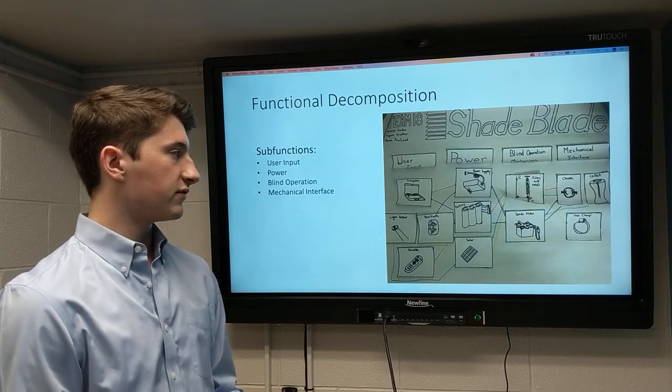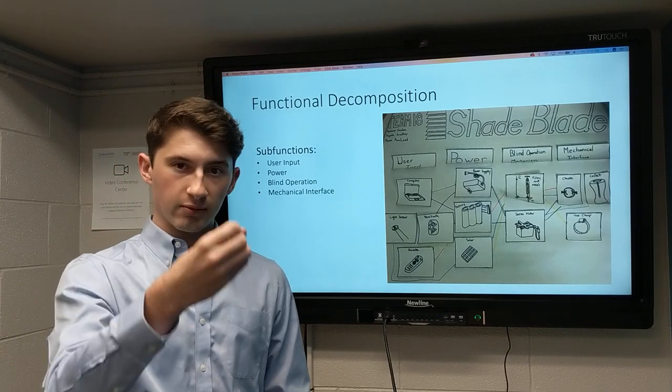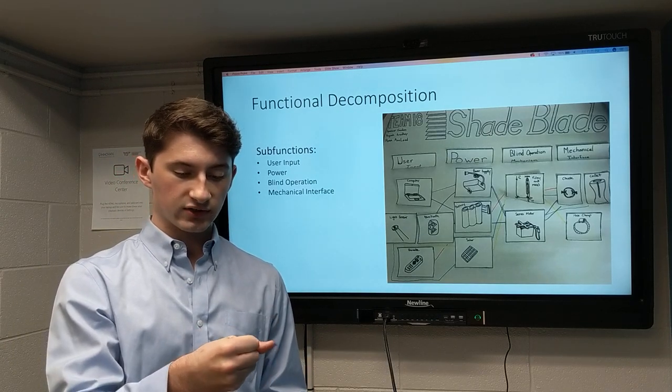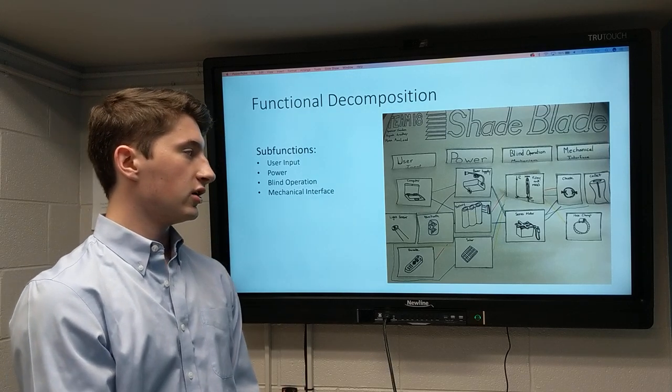For mechanical interface, this is how we actually connect to that blind, where you have that pull that comes down for the blinds, you have to twist it. There needs to be a way to actually grip that. Our three options were the chuck, the collet, and a hose clamp.